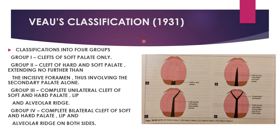The Veau classification was given in 1931 and divides clefts into four groups. Group 1 is cleft of the soft palate only. Group 2 is cleft of hard and soft palate not crossing the incisive foramen. Group 3 is a complete unilateral cleft of hard and soft palate, lip, and alveolar ridge, crossing the incisive foramen. Group 4 is complete bilateral cleft of soft palate, hard palate, lips, and alveolar ridges.